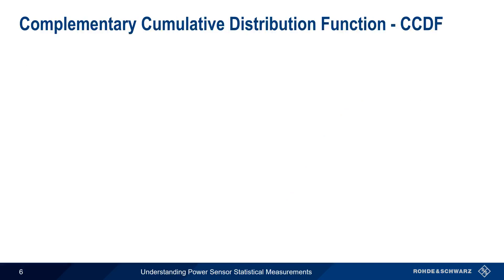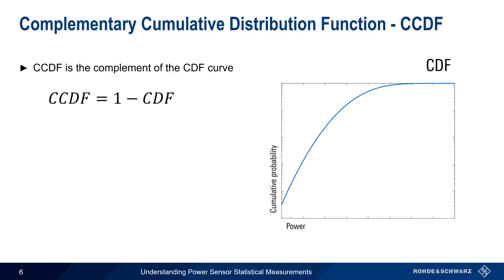Using the Cumulative Distribution Function, we can compute something called the Complementary Cumulative Distribution Function, or CCDF. As the name implies, CCDF is the complement of the CDF curve, which is a fancy way of saying that the CCDF curve values are 1 minus the CDF curve values.